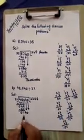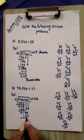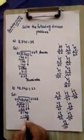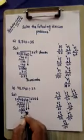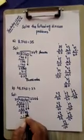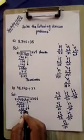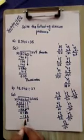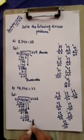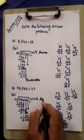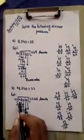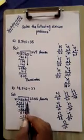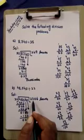Now subtract: from 0 subtract 2 — we can't, so borrow from 1; here is 10, cancel 4 and write 3 remaining. From 10 subtract 2 is 8 remaining; from 3 subtract 3 is 0 remaining; here 0 is remaining. So the remainder is 0. We have divided 48540 by 22 — the answer is 2206.